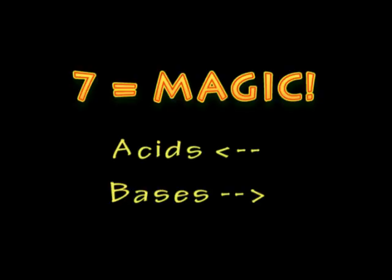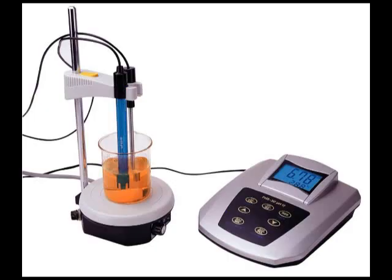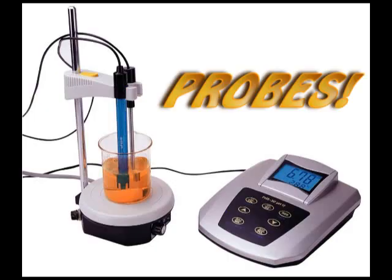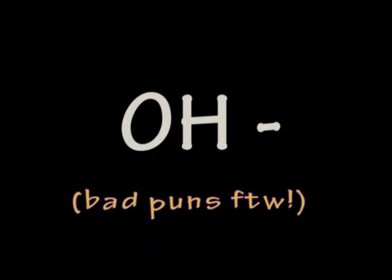7 is the magic number. Acid's below and base is higher. A pH meter uses probes to measure conductivity of things you know.